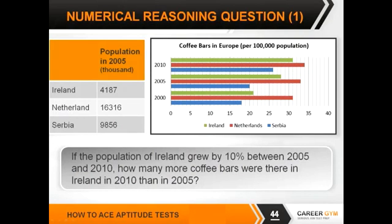Let's step it up a gear. This is the first example question around numerical reasoning. You can see you've got a table, a bar chart, and a question: 'The population of Ireland grew by 10% between 2005 and 2010. How many more coffee bars were there in Ireland in 2010 than in 2005?' As a word of warning, this is a multi-stage question — you'll need to work through multiple calculations before arriving at the right answer. Take a couple of minutes to give it a go and then we'll debrief on the correct answer.